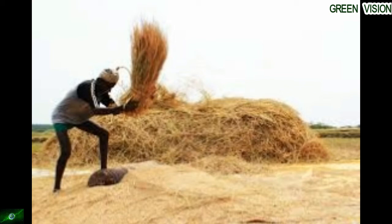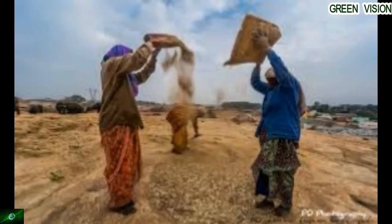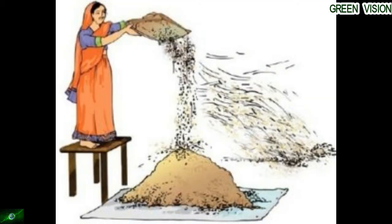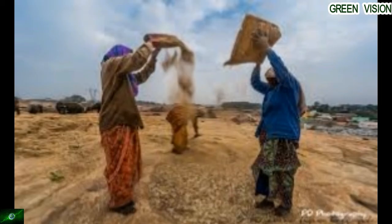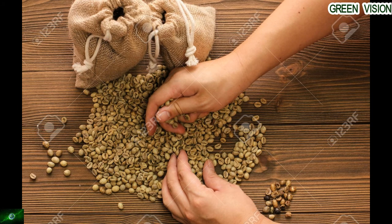What is threshing? The farmers separate the grains from their stock by beating them so hard that the grains are separated. This is called threshing. When harvested, rice, wheat, and other food grains are covered in husk, which cannot be eaten. Husk is very light and gets easily blown away by the breeze or wind.